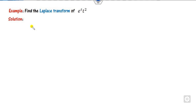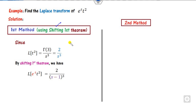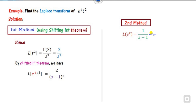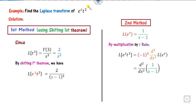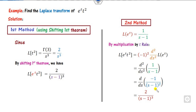Let us start with the first example: e raised to power (at) multiplied by t squared. Since there is an exponential part, you can solve this using the first shifting theorem. Since there is also a polynomial, you can solve it using multiplication by t — so there are two methods. For the multiplication by t method: we know the Laplace of the exponential, and since we have t squared, we take the derivative two times with respect to s. Since (-1) raised to power 2 is +1, we take the second derivative, and that gives the required answer. Both methods give the same result.